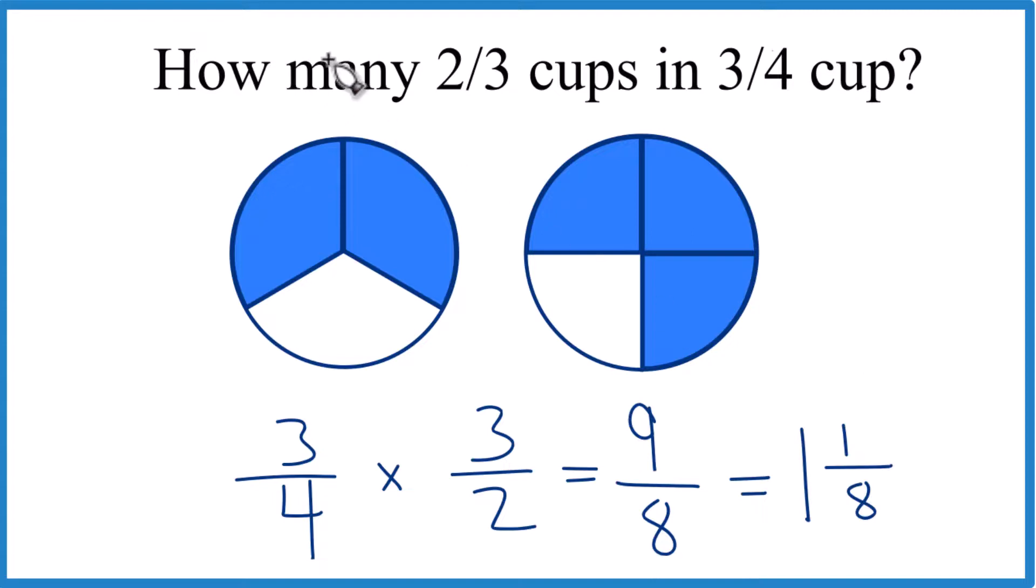So we could say, how many times does two-thirds cups go into three-fourth cup? The answer would be one and one-eighth, or you could say nine-eighths. It's Dr. B.